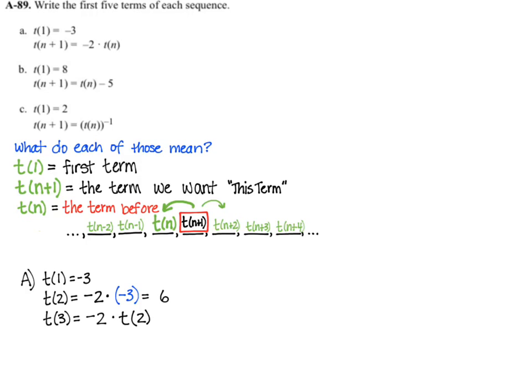T(3) is -2 times T(2), but we know what T(2) is, it's 6, so we plug that in and evaluate. T(4) is -2 times T(3). Again, we know what T(3) is now, so we plug it in and evaluate. And T(5) is -2 times T(4), which we know is 24, so we plug that in.